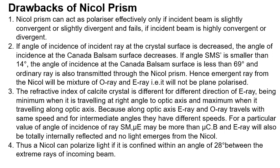The second drawback: if the angle of incidence of the incident ray at the crystal surface is decreased, the angle of incidence at the Canada balsam surface also decreases. If angle SMS' is smaller than 14 degrees, the angle of incidence at the Canada balsam surface is less than 69 degrees, and the ordinary ray is also transmitted through the Nicol prism. Hence, the emergent ray will be a mixture of O ray and E ray and will not be plane polarized.